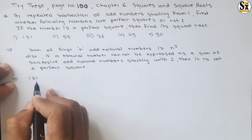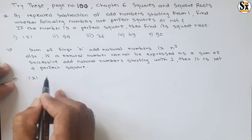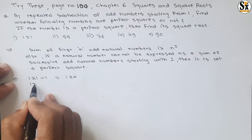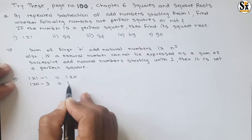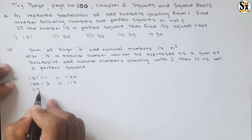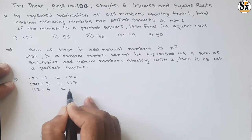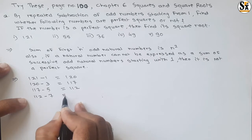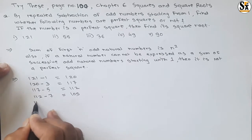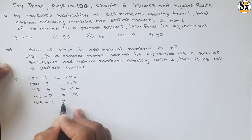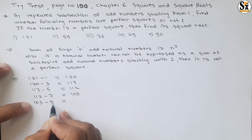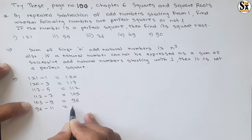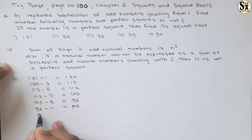For 121, start subtracting consecutive odd numbers starting with 1: 121 − 1 = 120, 120 − 3 = 117, 117 − 5 = 112, 112 − 7 = 105, 105 − 9 = 96.